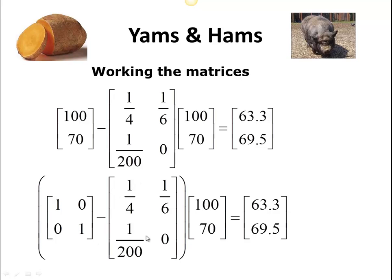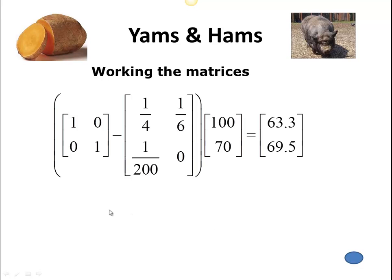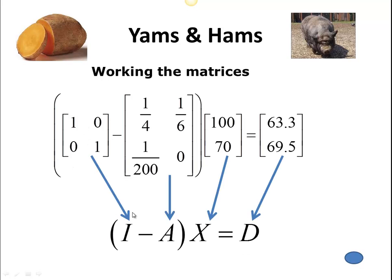And so that's what we've got here. In terms of a formula, this is the identity matrix — we'll call that I. The technology matrix, or the input-output matrix, we'll call A. Our production level we're going to call X, and our demand we're going to call D. So this is the nice relationship that we have. For your calculator, you can actually get the identity matrix — go to your matrix, then math, and you'll see it as the fifth item. And so that's how you can get your identity matrix.